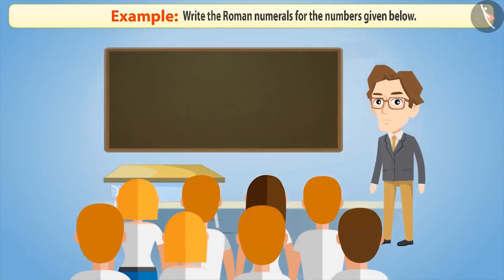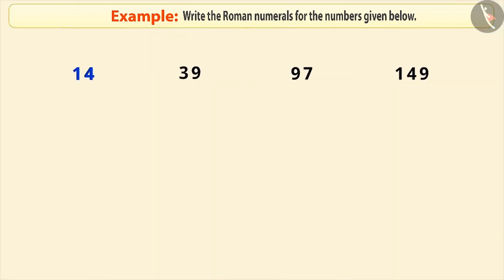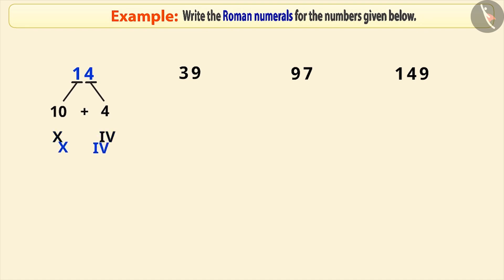Next example: in a quiz competition, a teacher asked his students to write the Roman numerals for the numbers given below. Can you answer them? Let's write 14 in Roman numerals. To represent any number in Roman numerals, we first express it as a sum of the place value of the digits. Next, we write the Roman numerals for each place value and then write them together.